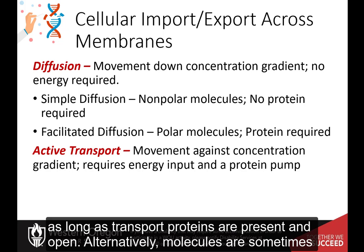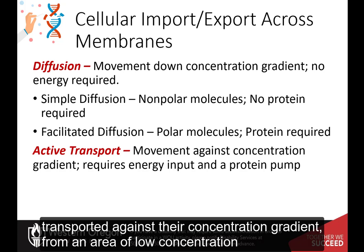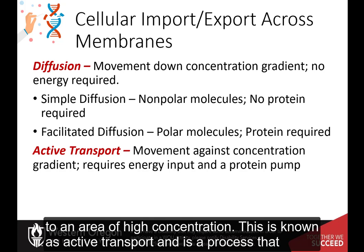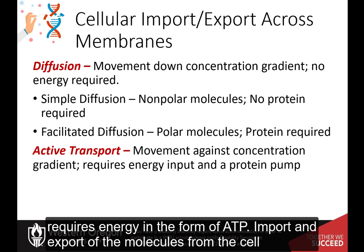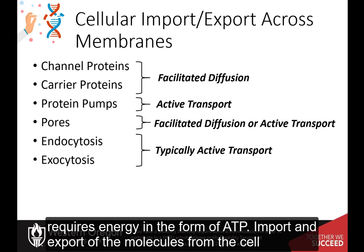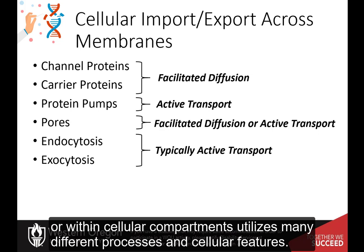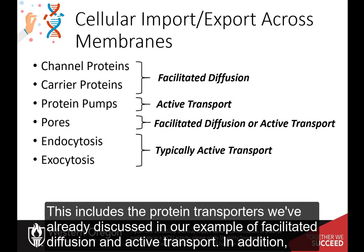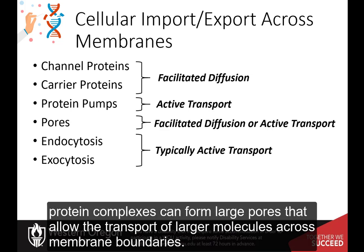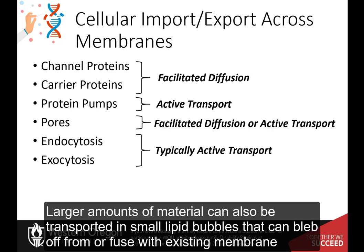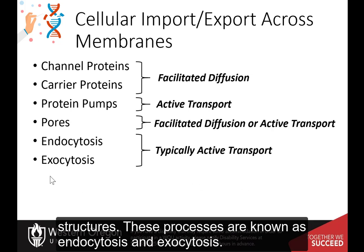No energy is required for facilitated diffusion, and it will also proceed spontaneously as long as transport proteins are present and open. Alternatively, molecules are sometimes transported against their concentration gradient from an area of low concentration to an area of high concentration. This is known as active transport and is a process that requires energy in the form of ATP. Import and export of molecules from the cell or within cellular compartments utilizes many different processes and cellular features. This includes protein transporters for facilitated diffusion and active transport. In addition, protein complexes can form large pores that allow the transport of larger molecules across membrane boundaries. Larger amounts of material can also be transported in small lipid bubbles that can bleb off or fuse with existing membrane structures. These processes are known as endocytosis and exocytosis.